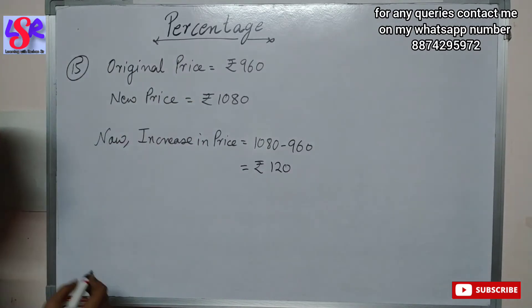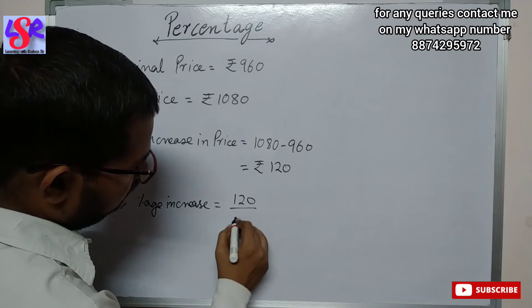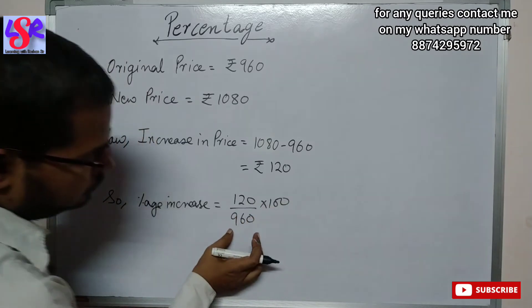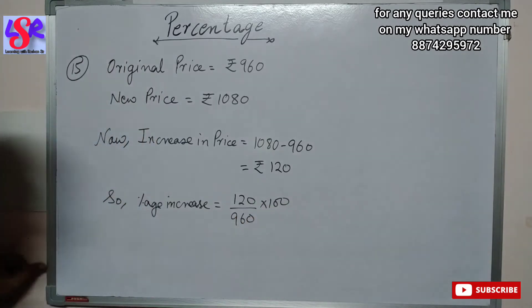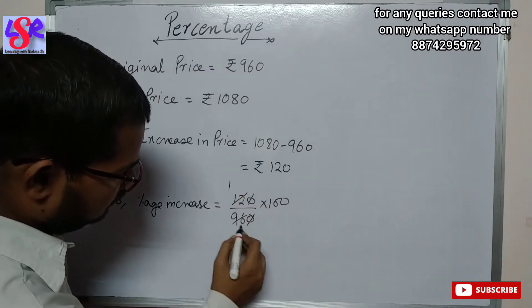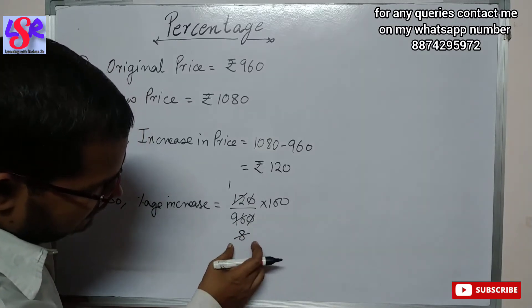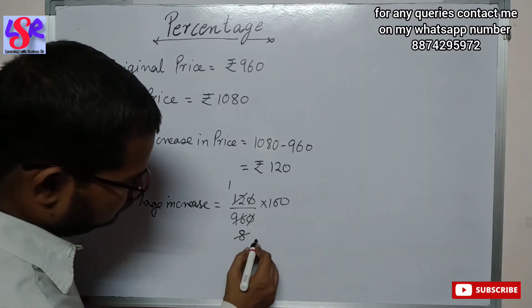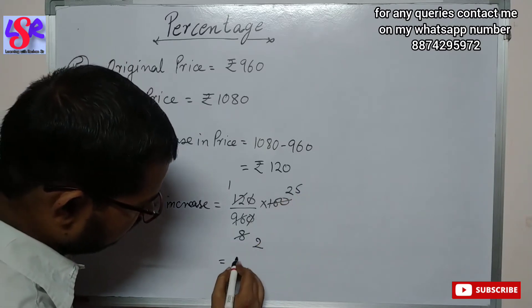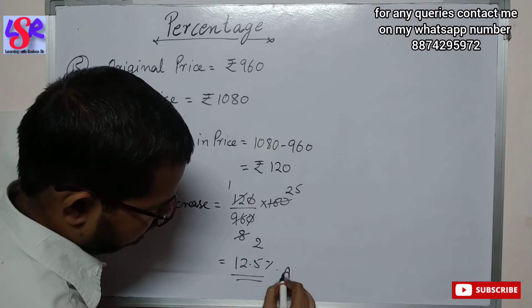So the percentage increase is 120 upon 960 into 100. Here we use the original price. The zeros cancel, giving 12 upon 96. We can cancel by 4, giving 2 and 25. So 25 upon 2 equals 12.5% as the answer.